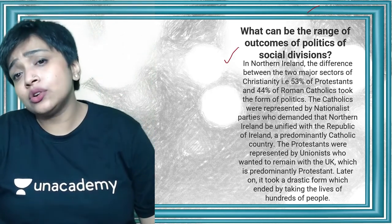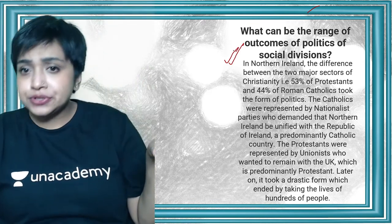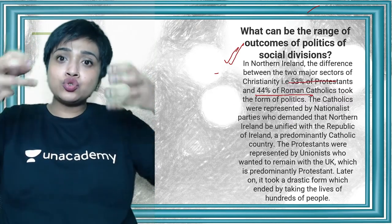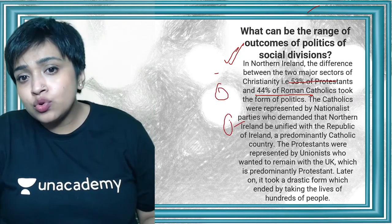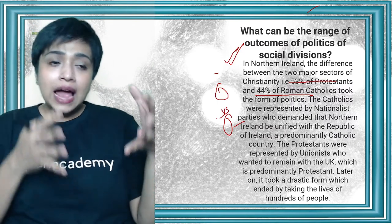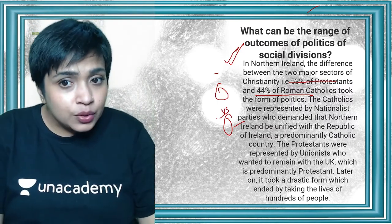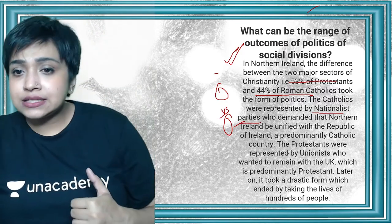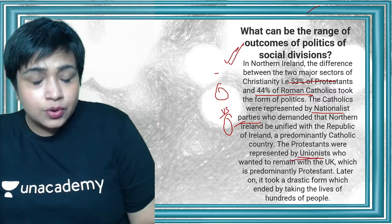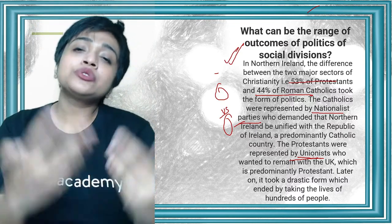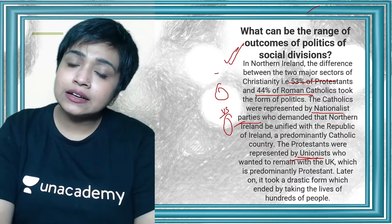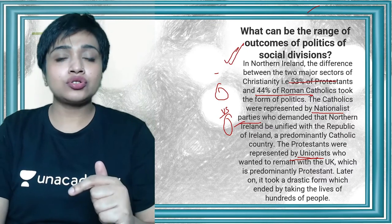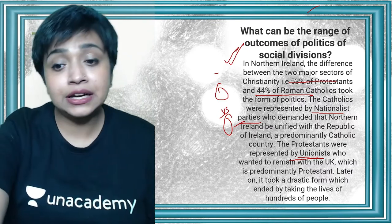This same case happened in Northern Ireland. About 53% of the population were Protestants and 44% were Roman Catholics. They became two groups against one another, politics got involved — Catholics were supported by the Nationalist Party and Protestants were represented by Unionists. That led to a civil war. So politics and social division exploded with very bad consequences.